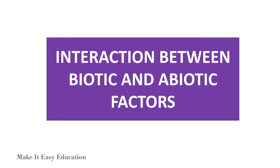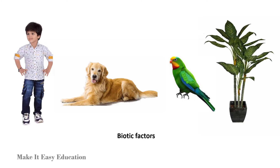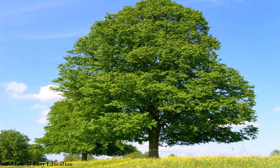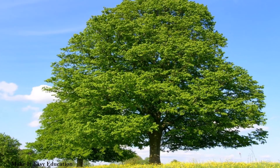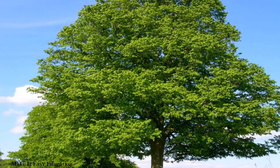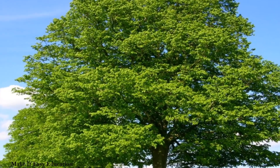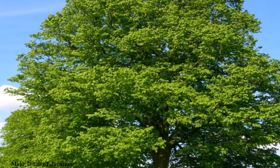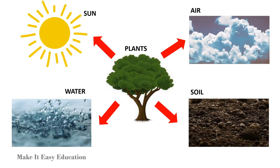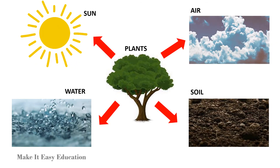All biotic factors depend upon abiotic factors for their living. Plants are the most important among all living things, because they are the only ones that can make food from abiotic factors like air, soil, water, and sunlight.